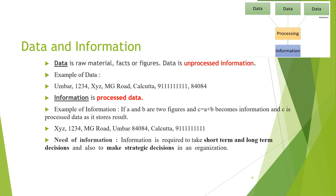Now, data and information. Looking at this figure, data undergoes processing to form information. Data is nothing but the raw material — facts and figures. It is unprocessed information because processing has not been done on it. Data can be of various types: numbers (0 to 9), alpha (a to z), or special characters like greater than, less than, percentage, dollar, hash signs — all are raw material or unprocessed information.